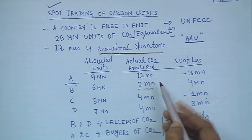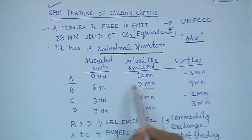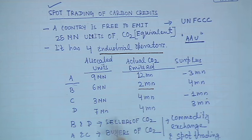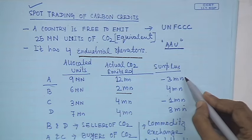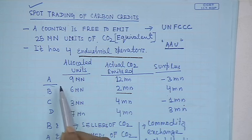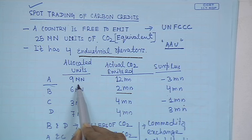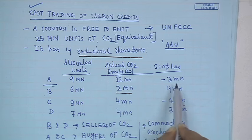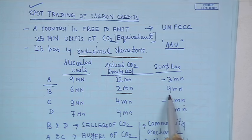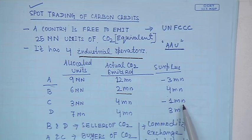Now consider the actual carbon dioxide emitted by year end: A emitted 12 million, B emitted 2 million, C emitted 4 million, and D emitted 4 million units. The surplus or deficit is: A has a deficit of 3 million (was allocated 9 million but emitted 12 million), B has a surplus of 4 million, C has a deficit of 1 million, and D has a surplus of 3 million.